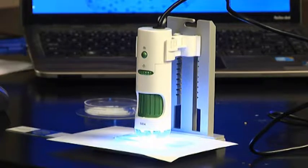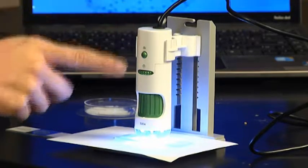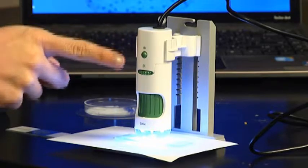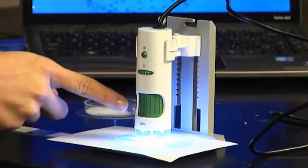The SmartScope 500 is extremely easy to use. You have three controls all on the front: the camera, the light dial, and the focus dial.